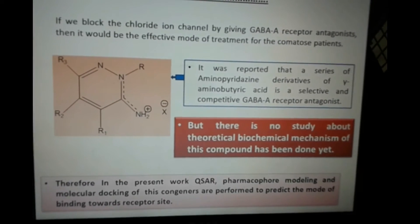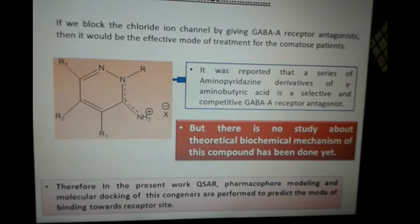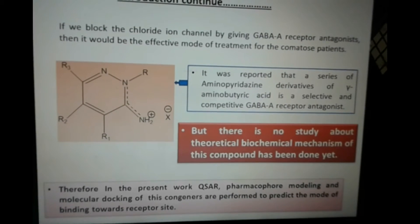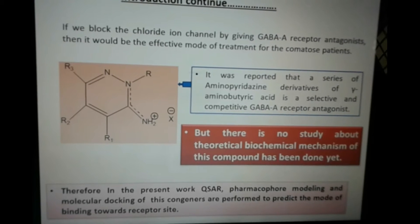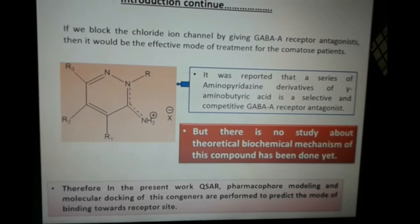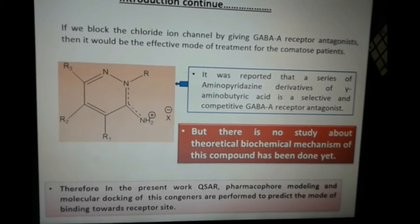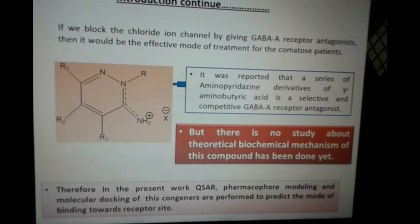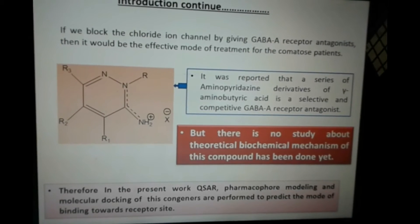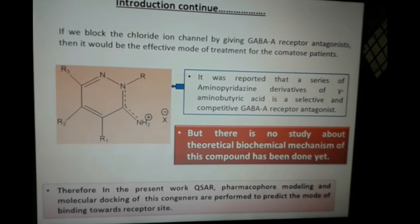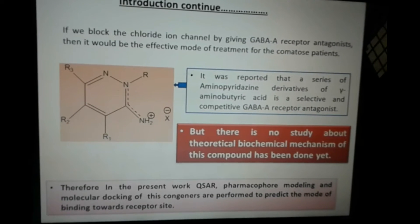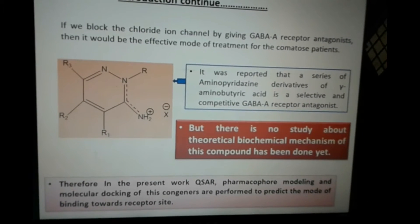The effective mode of treatment for comatose patients is to provide a selective GABA receptor antagonist which may block the chloride ion channel. It was reported that a series of aminopyridazine derivatives of GABA is a selective and competitive GABA receptor antagonist, but there is no theoretical study for the prediction of biochemical mechanism of these congeners reported yet.